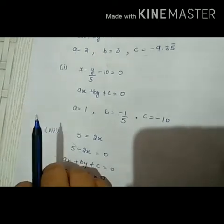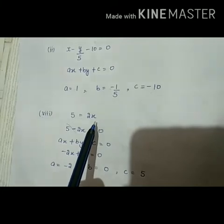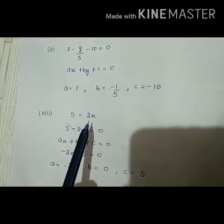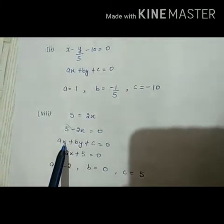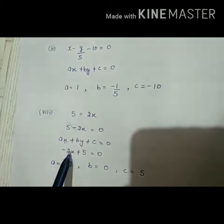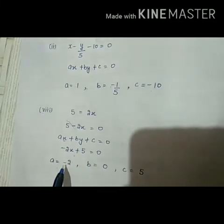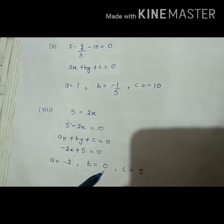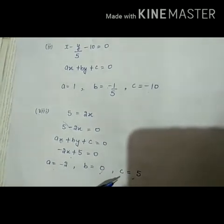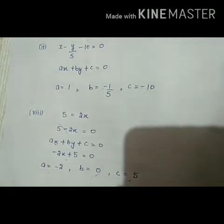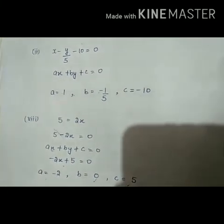The remaining parts you should try on your own and send me your homework. Let me show you part 8: 5 is equal to 2x. You might wonder there is no y term here. Rearrange it as 5 minus 2x is equal to 0, then compare with standard form. So a is equal to minus 2, b is equal to 0 since there is no y term, and c is equal to 5. This completes Exercise 4.1. I hope you understood both problems — thank you very much.